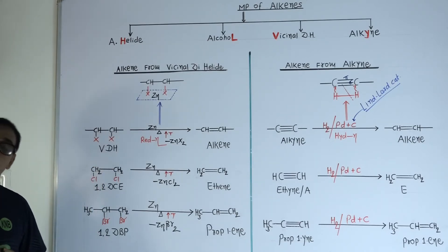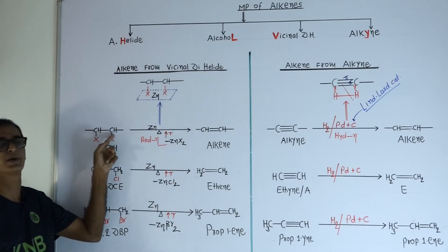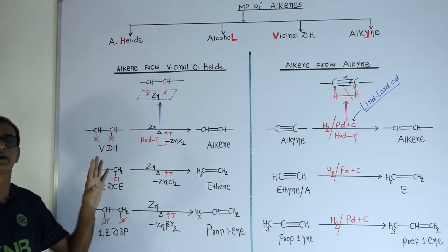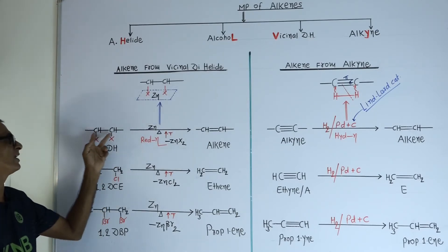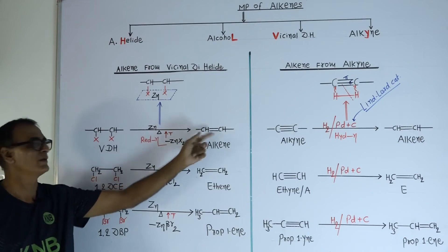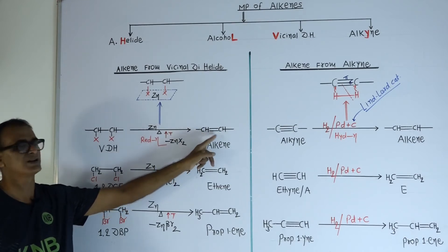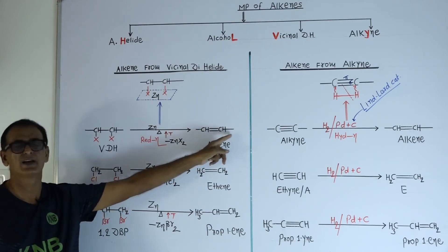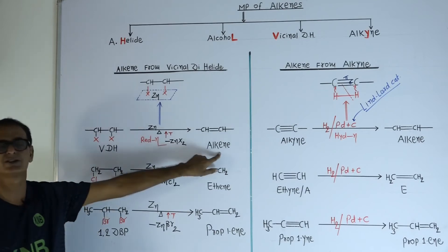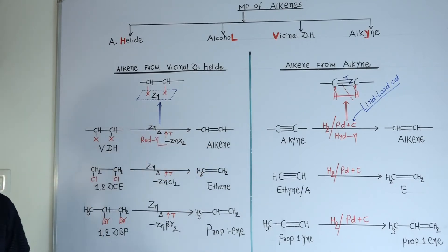To satisfy the tetravalency property of both carbon atoms, a double bond will arise between both carbon atoms. This gives CH double bond CH — this is the general formula of alkene compounds.